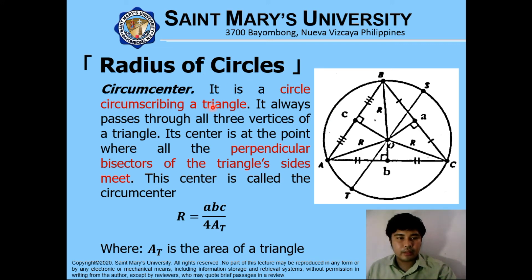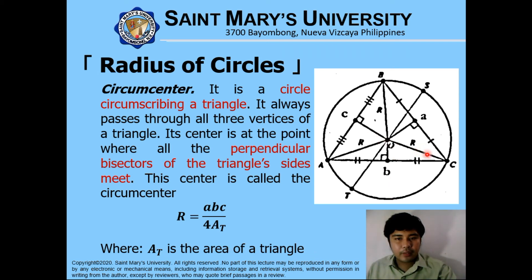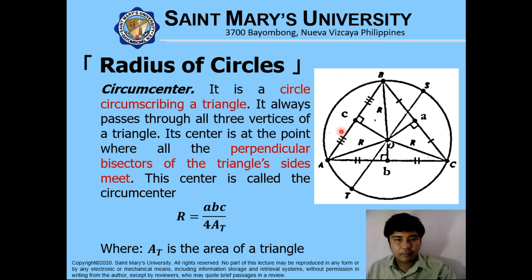The circumscribed circle, or circumcenter, is a circle circumscribing a triangle — it always passes through the three vertices. Its center is at the point where all of the perpendicular bisectors of the triangle's sides meet. The radius of this circle is computed as: R equals A times B times C divided by 4 times the area of the triangle, where A, B, C are the sides of the triangle.